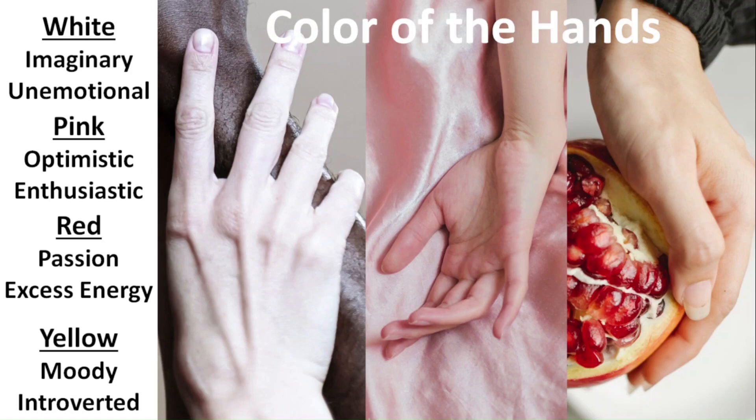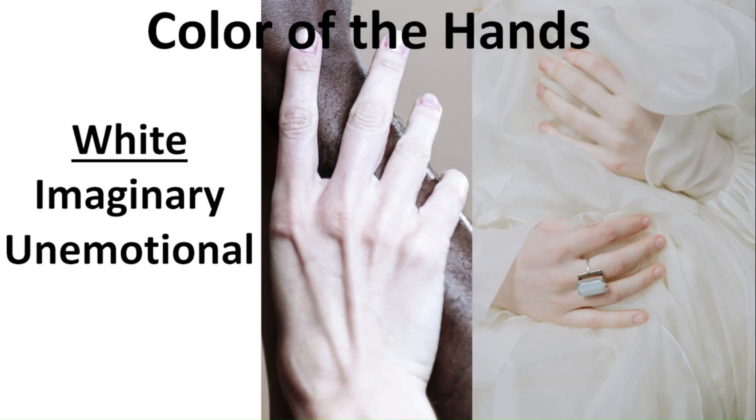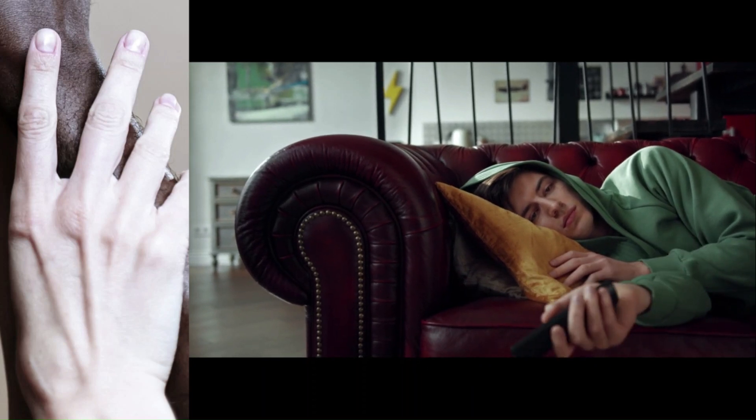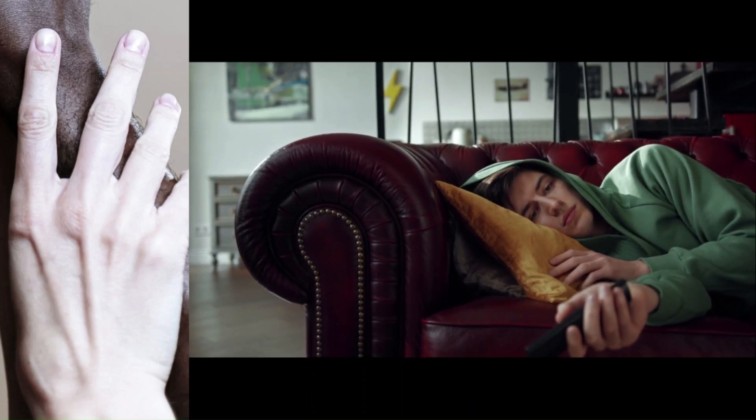When the hand is white, not from natural whiteness of a person's skin, like the hand on the right, but when it looks pale, like there's no blood circulating through it, like the hand on the left, this person's very dreamy, mystical, unemotional, and lacks enthusiasm for life.